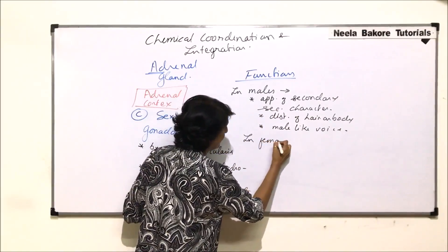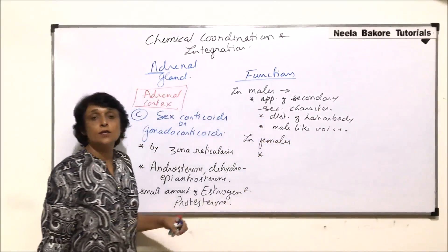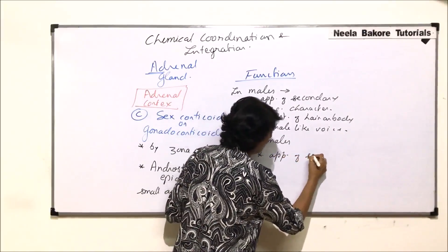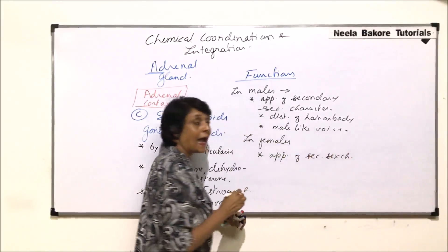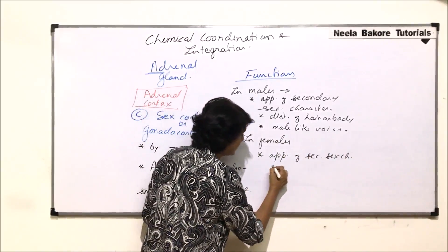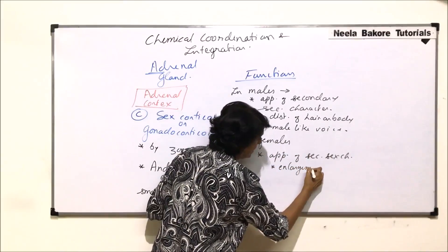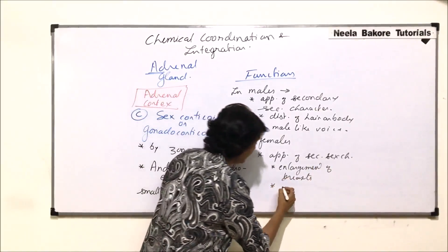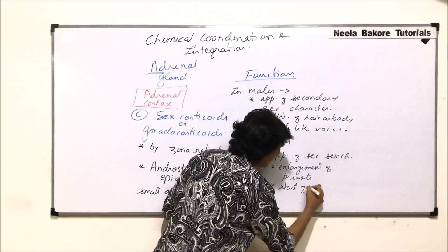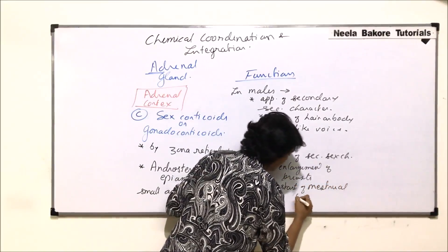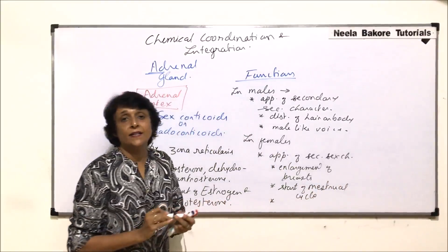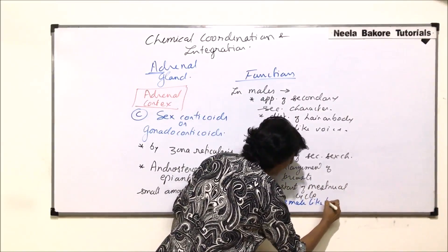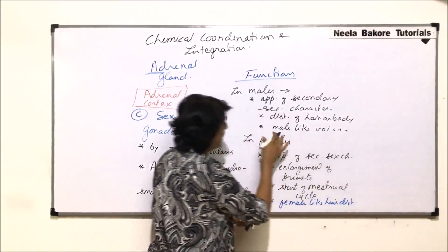In females, sex corticoids are responsible for the appearance of secondary sex characters. In the case of females, these characters include enlargement of breasts, the starting of the menstrual cycle, and female-like hair distribution.